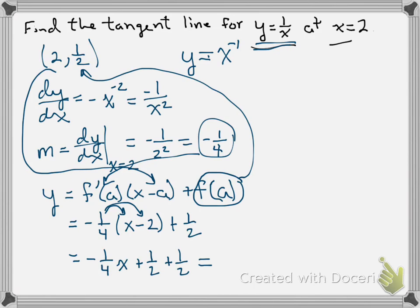Then we have the plus 1 half at the end, so if we wanted it in a y equals mx plus b form, we get negative 1 fourth x plus 1.